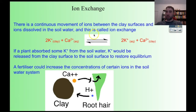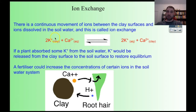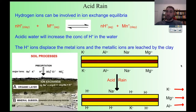There's a continuous movement of ions between clay surfaces and ions dissolved in the soil — we call that ion exchange. For example, potassium adsorbed onto the clay surface can exchange with calcium in the soil water: the potassium goes into the soil water and the calcium gets stuck to the clay. This is an equilibrium, so if a plant absorbs potassium ions from the soil water, more potassium is released from the clay to maintain concentration. If you add fertilisers, you can increase the concentration of these ions to help plant growth.